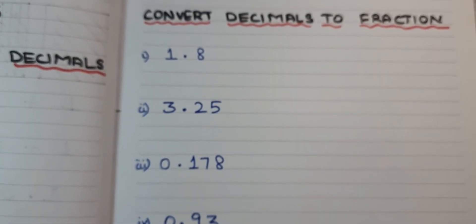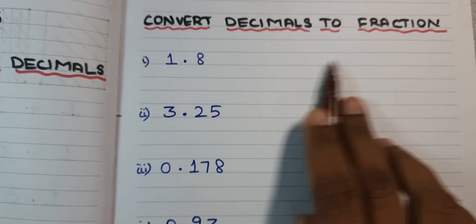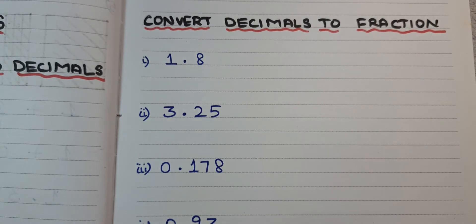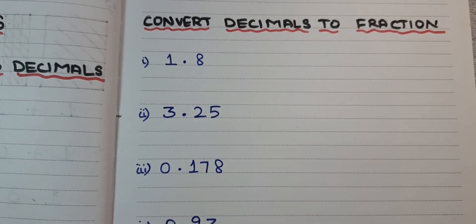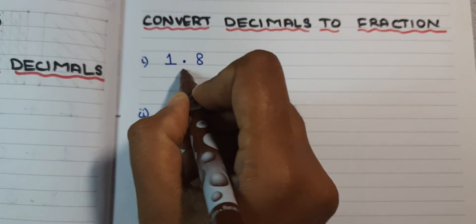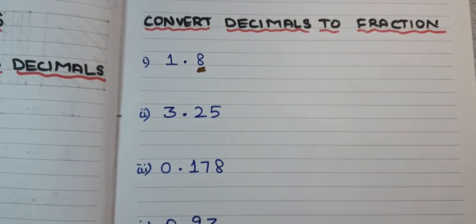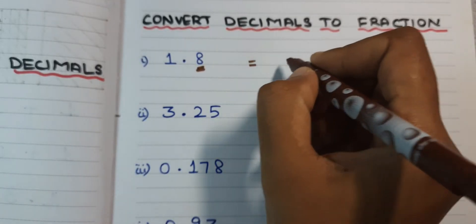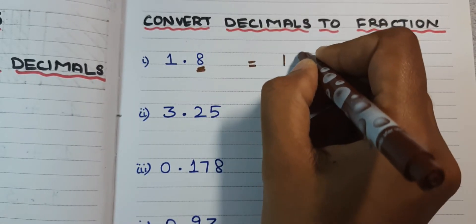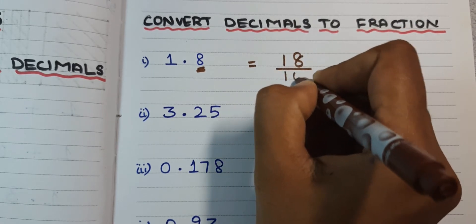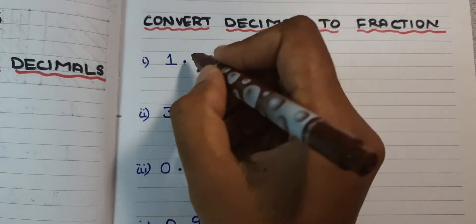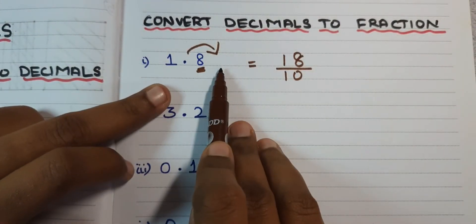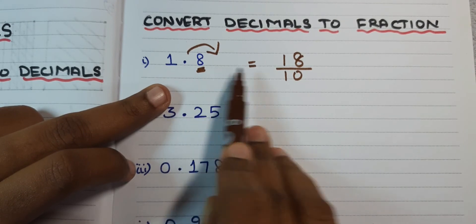Next we are going to see how to convert decimals to fractions. This is the decimal form and I am going to change it to fraction form. A fraction has a numerator and a denominator. The first decimal is 1.8. The decimal point is placed before one digit — one digit means one zero — so you write it as 18 divided by 10.